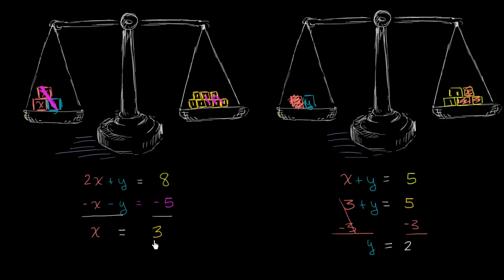So x equals 3 kilograms and y equals 2 kilograms. I encourage you to verify this: 2 x's are 6 kilograms, plus y which is 2 kilograms, balances 8 kilograms. And 3 plus 2 equals 5, which checks out on the second scale too.